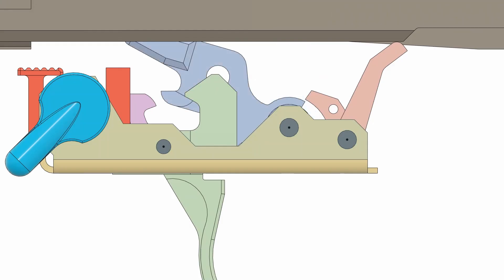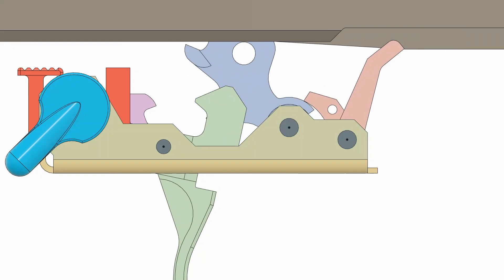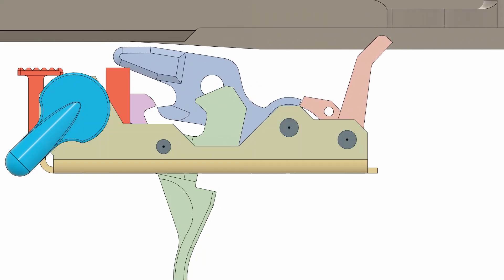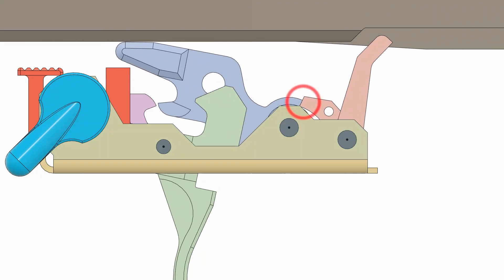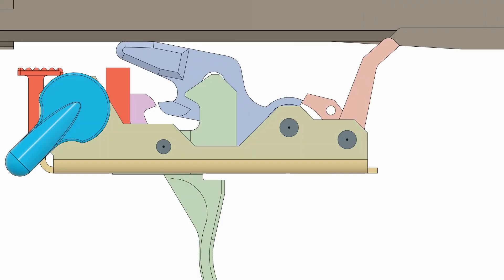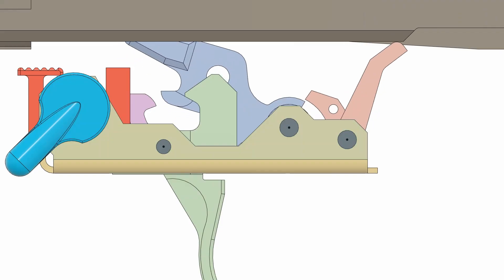Now let's look at the correct way to design a fire control group. The auto sear engages the hammer before the trigger. You fire and the gun does not fully go into battery. Now the hammer is being held by the auto sear. And because the trigger hook engages the hammer later, as you release the trigger, it falls into place ready to catch the hammer. You tap the charging handle forward, the bolt carrier trips the auto sear, the hammer falls forward and rests on the trigger hook. You can fire the gun normally again.